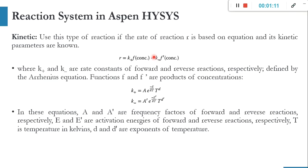For this type of system we will be using the kinetic rate expression. The rate is the forward reaction minus the reverse reaction: r = K⁺·f(C) − K⁻·f(C). Here K⁺ is computed as the pre-exponential factor times an exponential of activation energy over RT, multiplied by T raised to a power D, showing temperature dependence. A and A' are frequency factors of forward and reverse reactions, E and E' are their activation energies, T is temperature, and D and D' are temperature exponents.